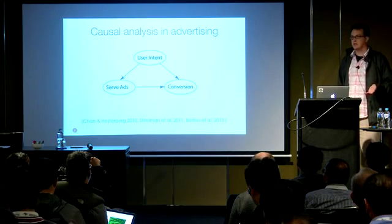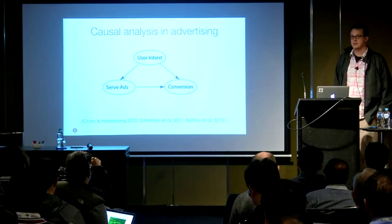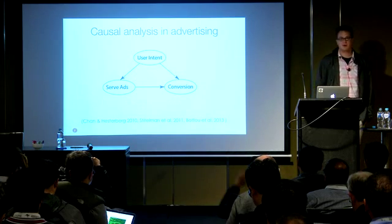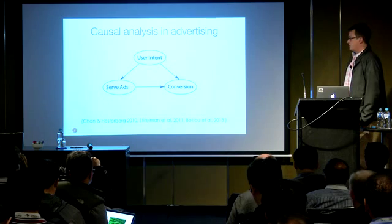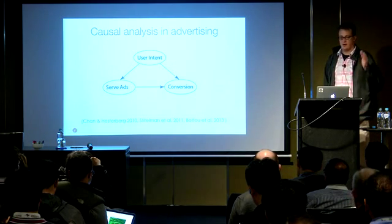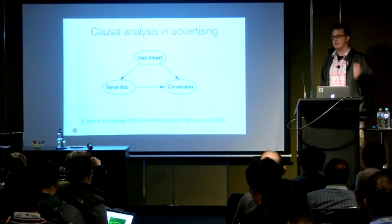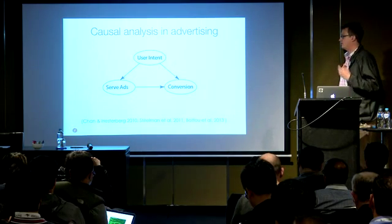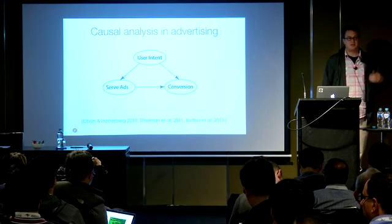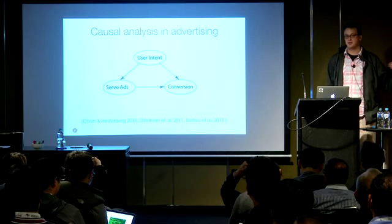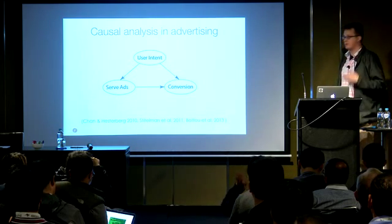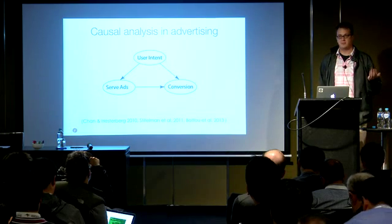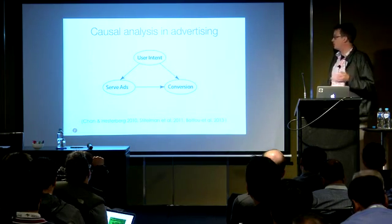There has actually been some success — in previous KDD papers out of Google and Distillery, another advertising company in New York — where they were able to correct for these confounders and the selection bias. However, those studies weren't of general usefulness because there are situations where the same organization sending the ad is also the one doing the analysis. As a third party or as the advertiser yourself, you would like to be able to make this measurement and not just rely on the publisher to self-report. So we're looking for an analysis method that a third party can do to monitor the performance of an advertising campaign.